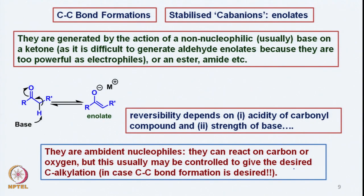Now we see how C-C bond formations can be done. C-C bond formation was initially done by generating a carbanion, which is a stabilized carbon ion because it gives an enolate. So if we have a ketone and treat it with a non-nucleophilic base, we get an enolate.